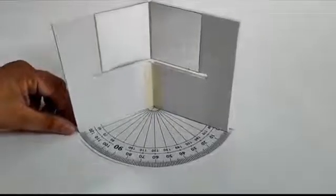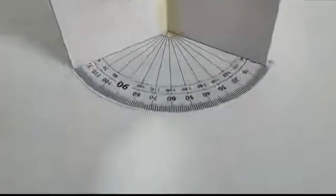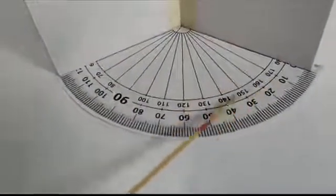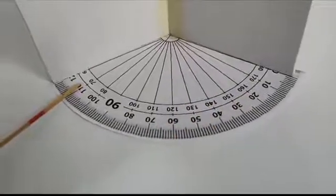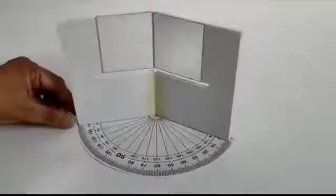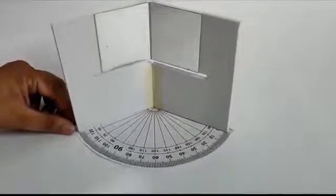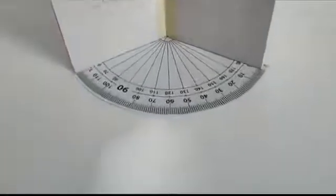Now we will change the angle and take second set of observation. First, measure the angle between the mirrors and note it down in the observation table.